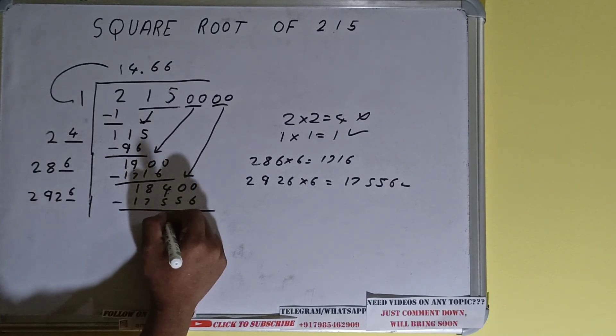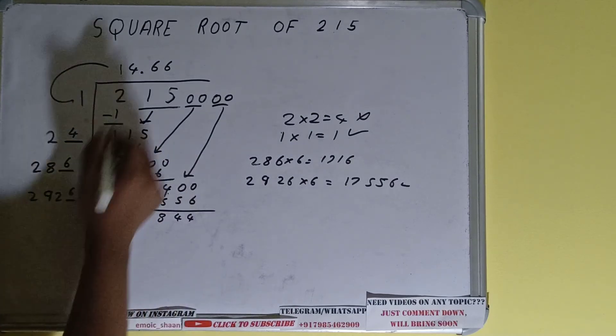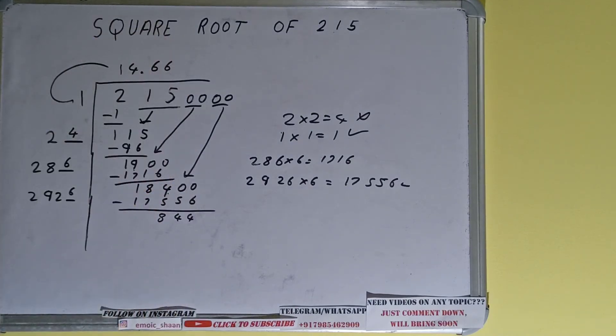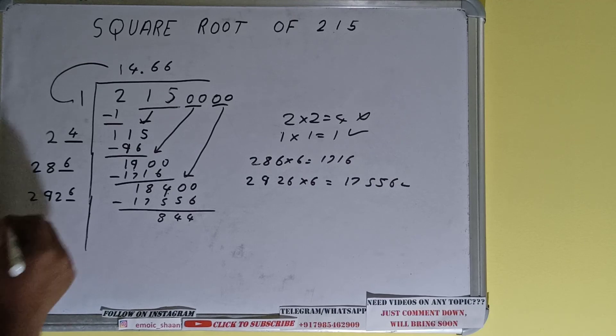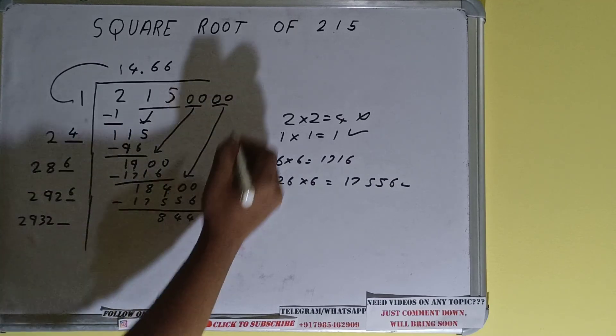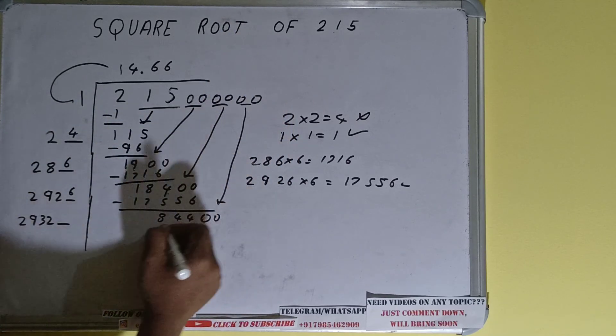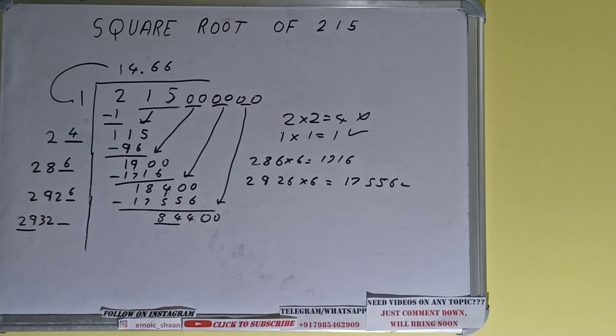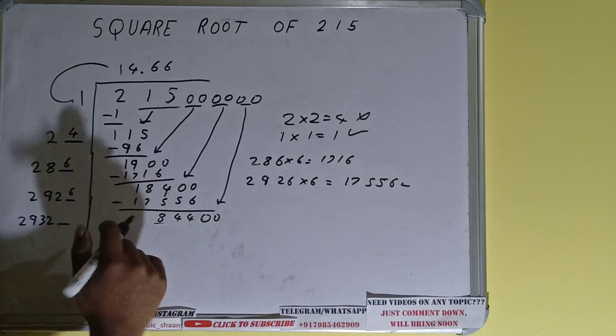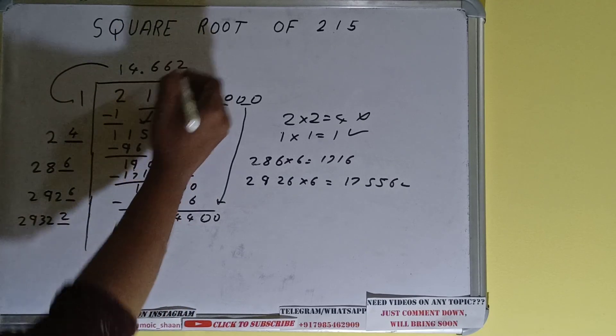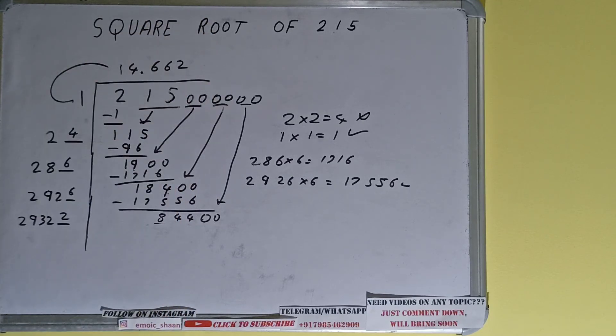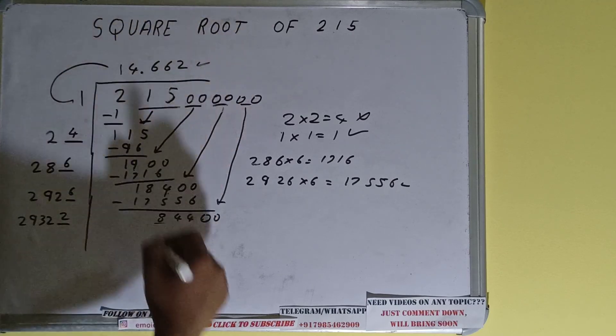Now 2926×6 we did right, so add both. So 2926+6 will be 2932 and one digit extra over here. Bring one more pair of zeros down and number will become 84,400. Now compare this 29 and 84. So 29 threes are 87, so with this we can understand that two will surely work. Two here and two here, but we don't need to calculate because we already got our answer correct up to three decimal places. So square root of 215 will be 14.662 and that would be the answer.